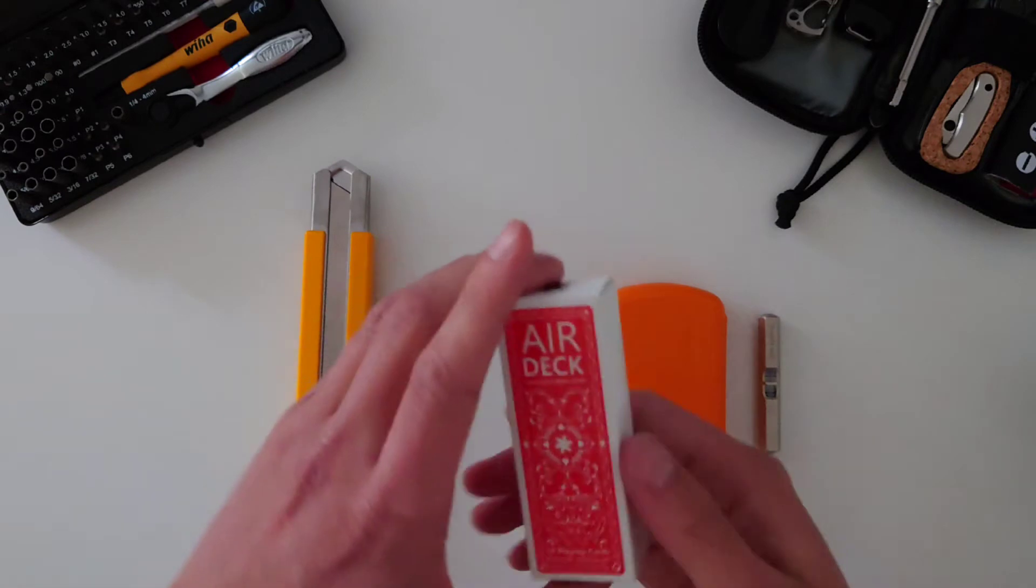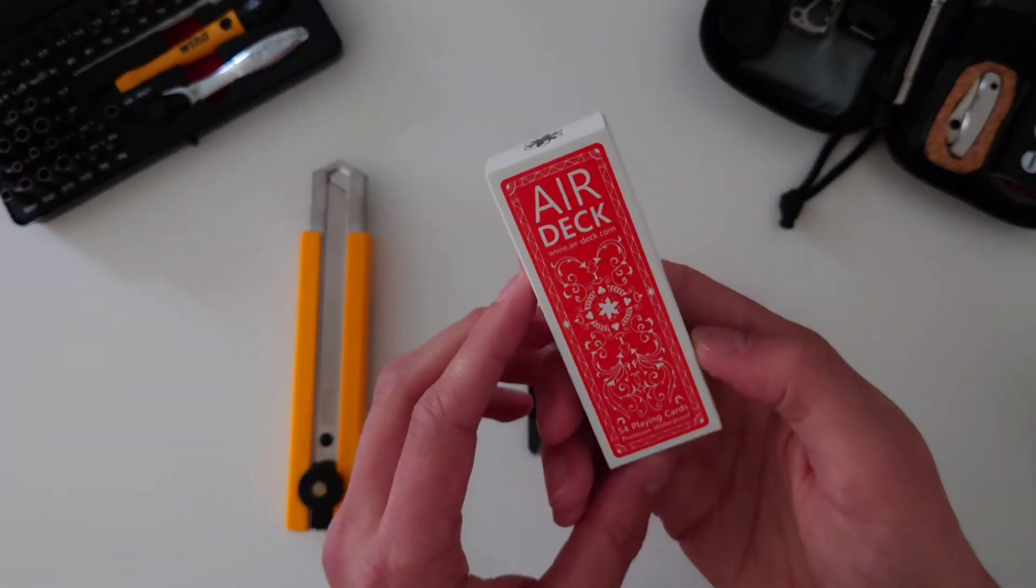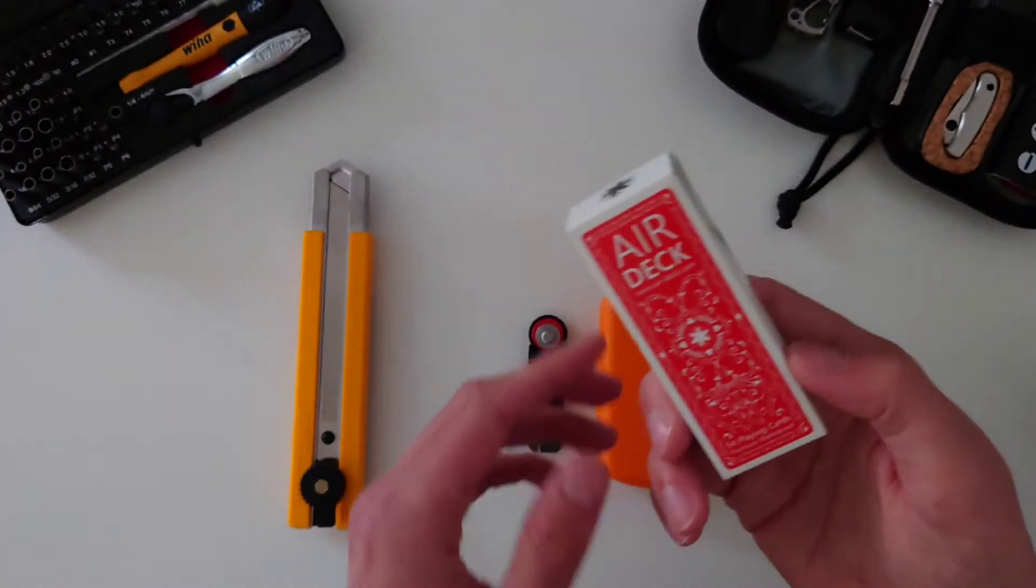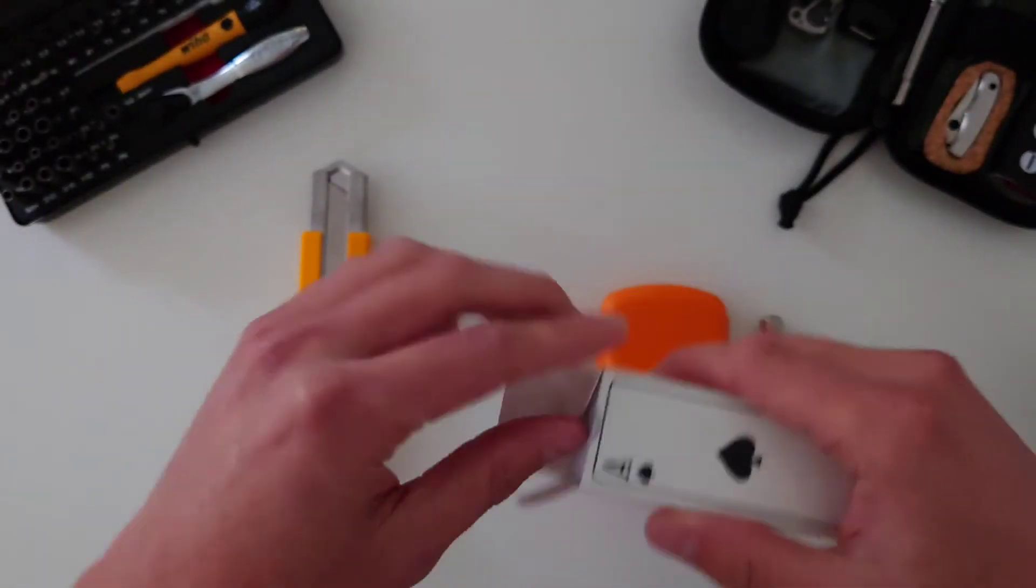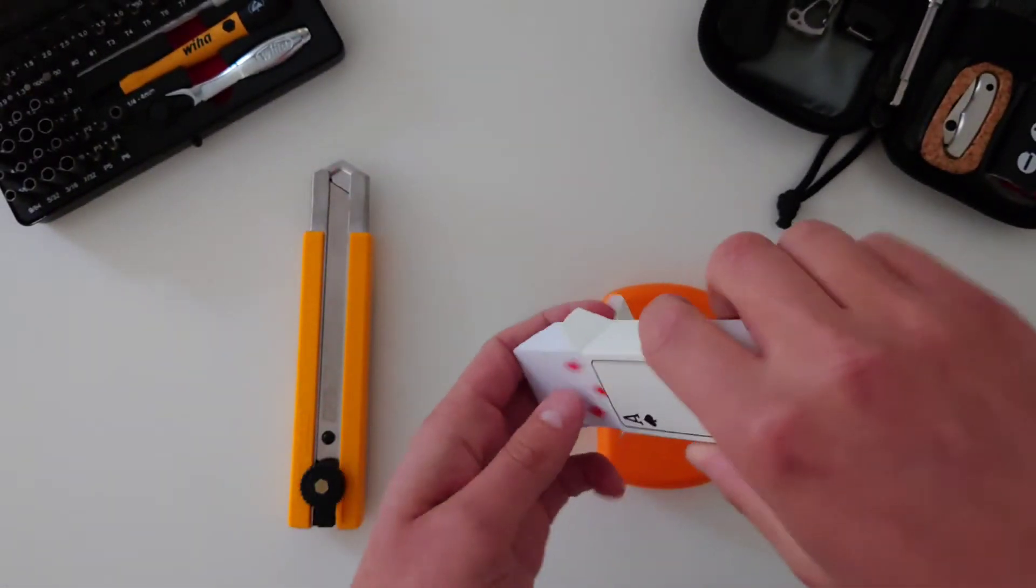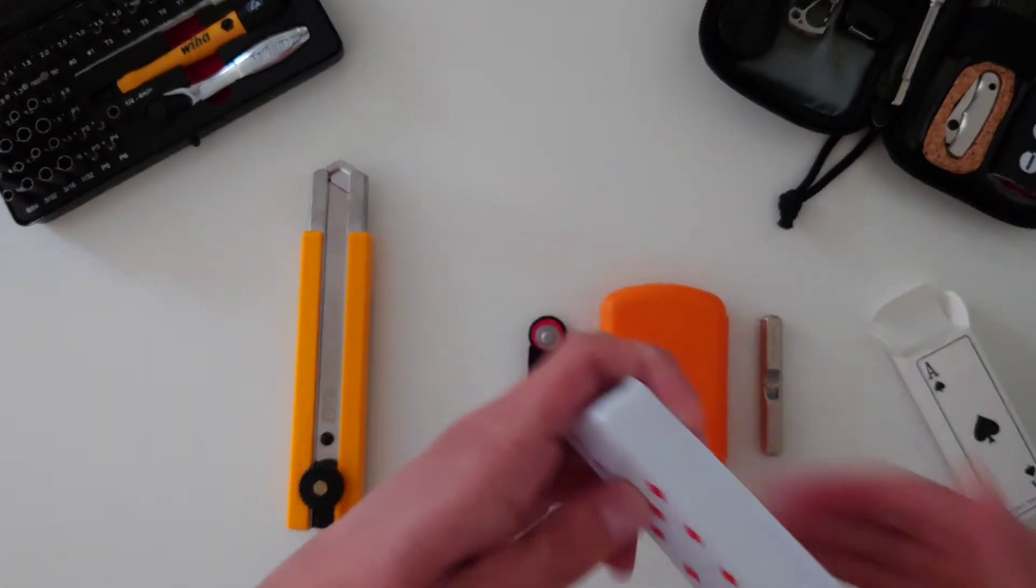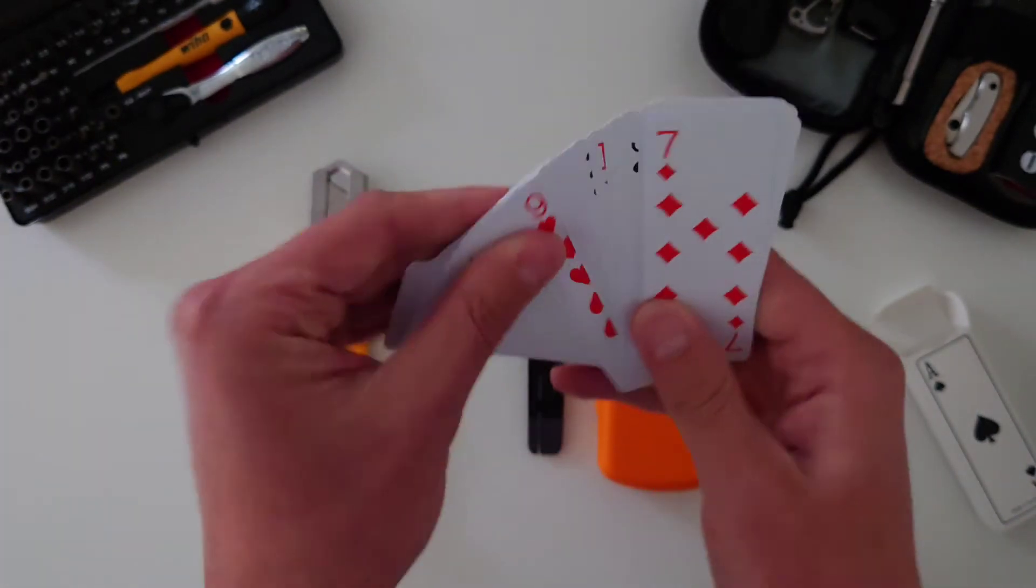The next item we'll be looking at is the Airdeck. This is a popular Kickstarter back in 2018 maybe. One of the beauties of this product is one, of course, the small pocketable size and two is the fact that they're made completely of plastic.